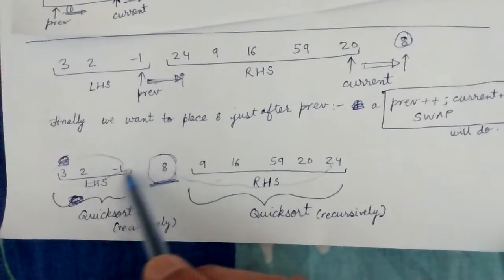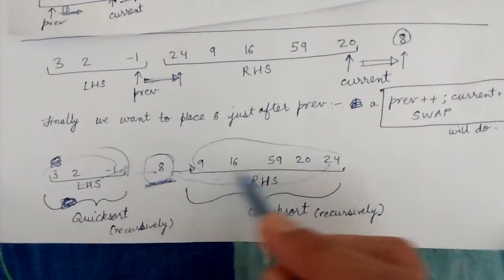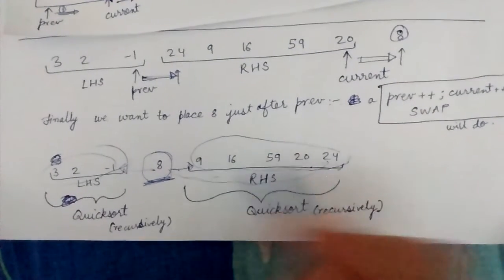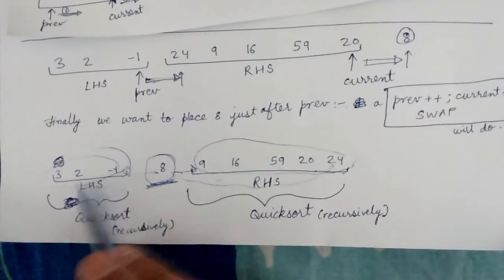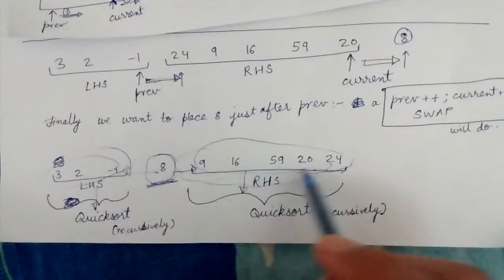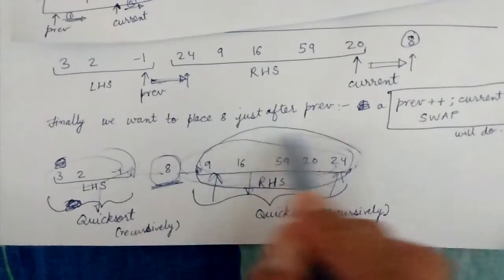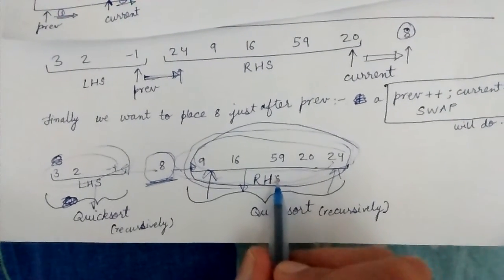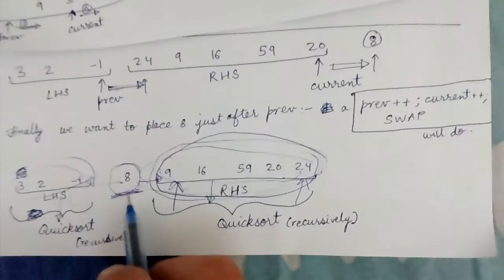The elements to the left of 8 should be in the left, and elements to the right should be on the right, but these sub-arrays themselves are not yet sorted. For example, 9, 16, 20, 24, and 59 still need to be ordered correctly. So now we have two sub-problems, and we recursively call QuickSort itself to sort each of these sub-arrays.